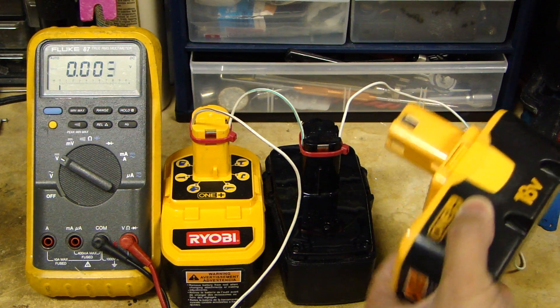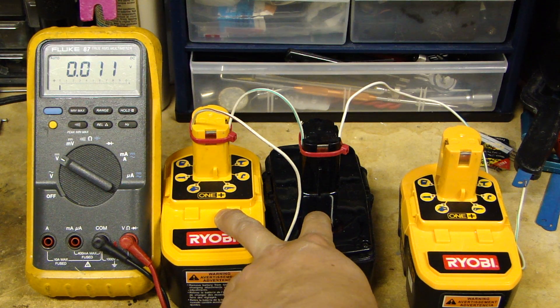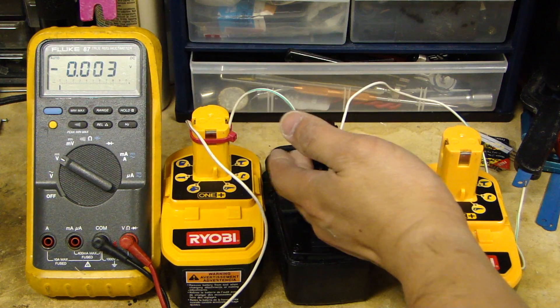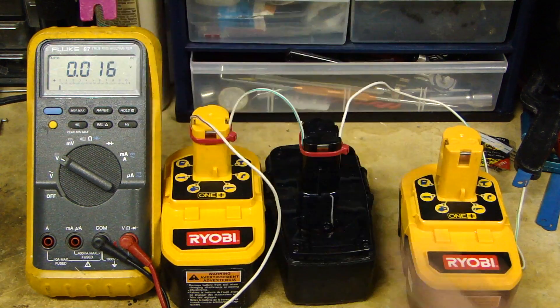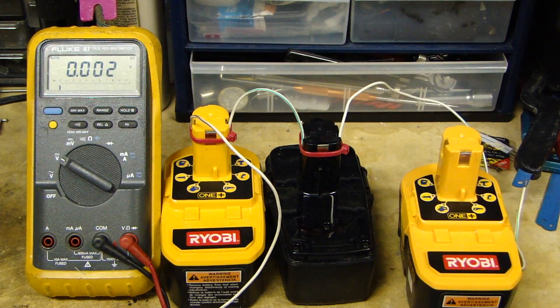This one is bad. This is the Ryobi 18 volt. I have two good NiCad batteries in series. As you can see, the wires are attached using tie wraps so I can remove them later on, and they're cinched up pretty tight so they won't come loose.